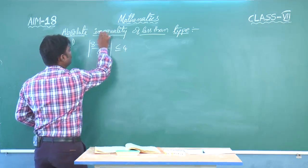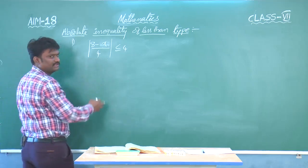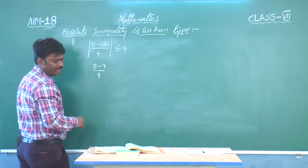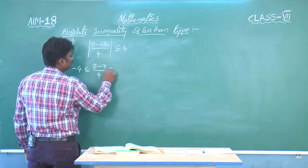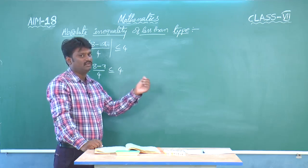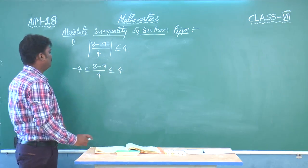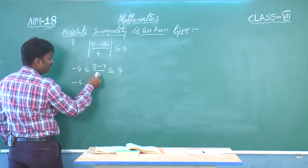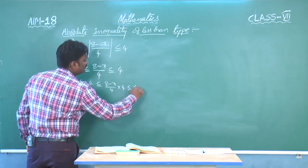Let us see one example. We have mod of (8 minus x) by 4, less than or equal to 4. As we know, mod x less than or equal to a means minus a less than or equal to x less than or equal to a. Here a equals 4, so we get minus 4 less than or equal to (8 minus x)/4 less than or equal to 4. To remove the division by 4, we multiply all three parts by 4.